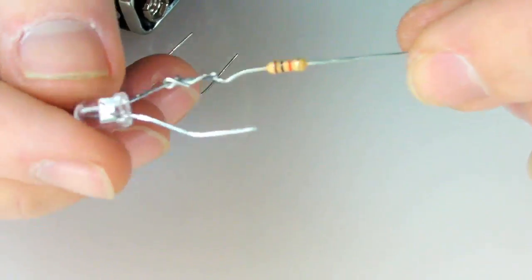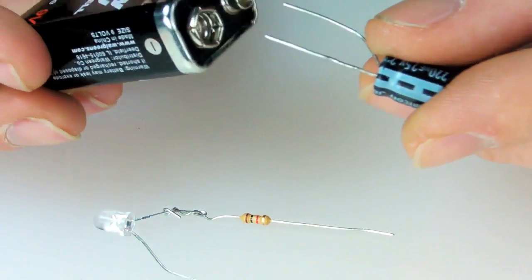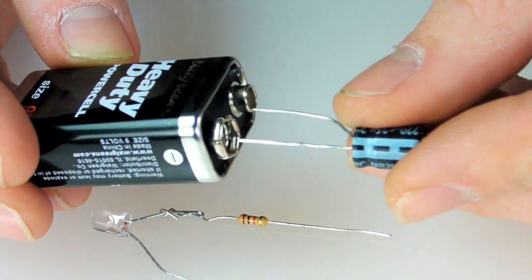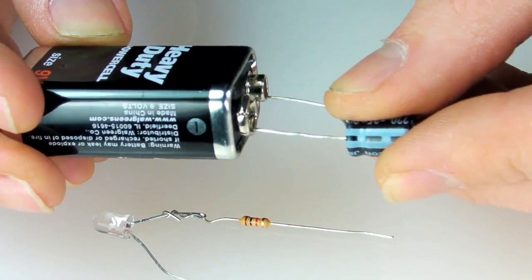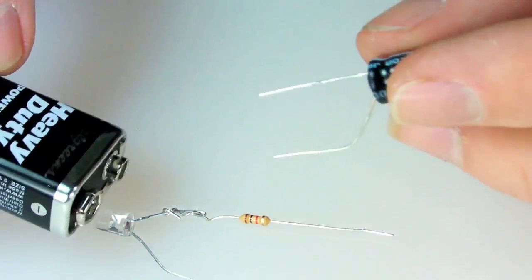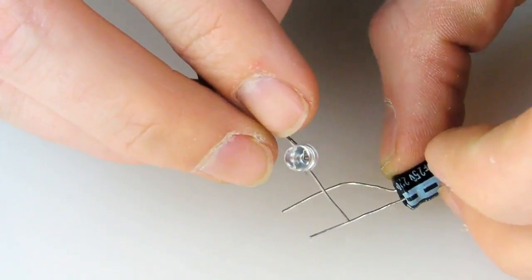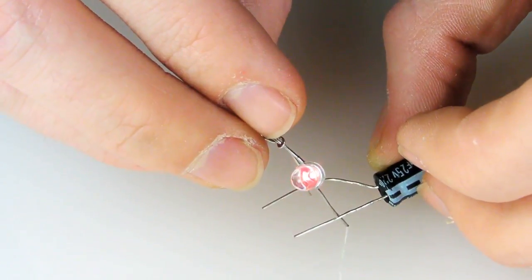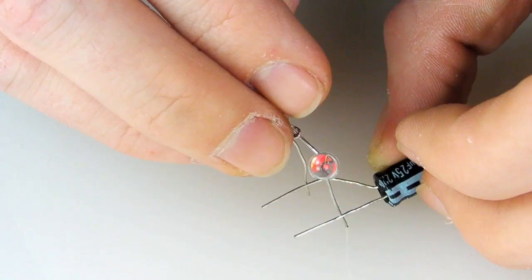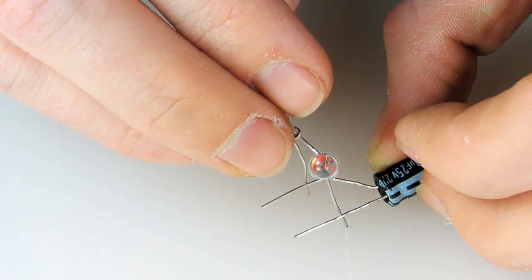Then I charge the capacitor by connecting its negative lead to the negative lead of the battery and the positive to the positive, just for a moment. Now when we connect the positive and negative leads of the cap and the LED, it lights up and dims as the capacitor equalizes its charge through the LED.